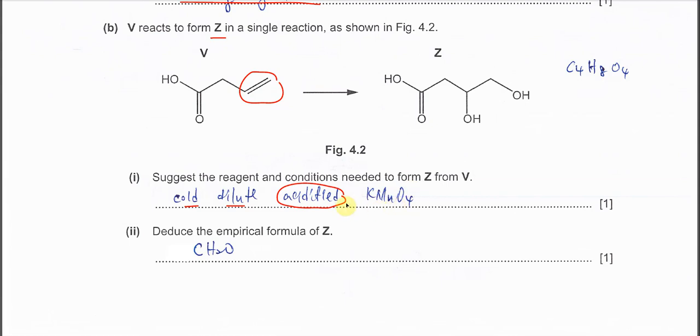Deduce the empirical formula of Z. First you have to count here. Carbon: 1, 2, 3, 4. Hydrogen: 1, 2, 3, 4, 5, 6, 7, 8 - so it's 8 hydrogen. Oxygen: 1, 2, 3, 4. So C4H8O4 empirical is CH2O.